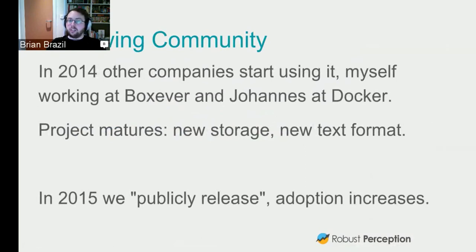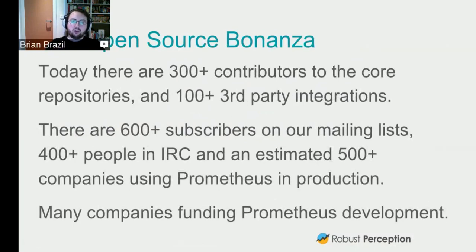In 2014 other companies started using it, including myself and Johannes in Docker, which is another component of OpenShift. We had a new v2 storage system and a new text format which we're still using today. In 2015 we publicly released it — previously everything was on GitHub but we didn't really tell a lot of people — and since then we've seen quite an uptick in usage. There are about 300 contributors to the core repositories, over 150 third-party integrations, several hundred people on the mailing list and IRC.